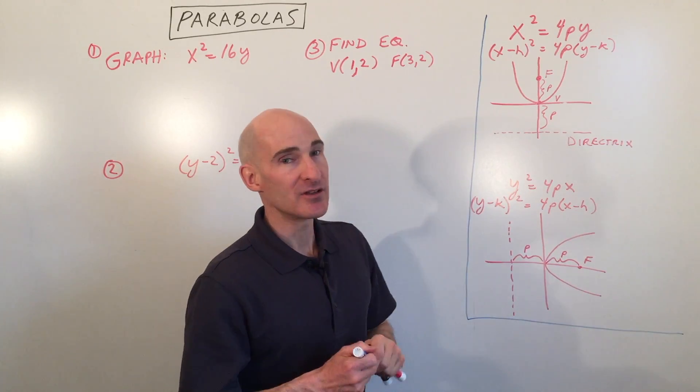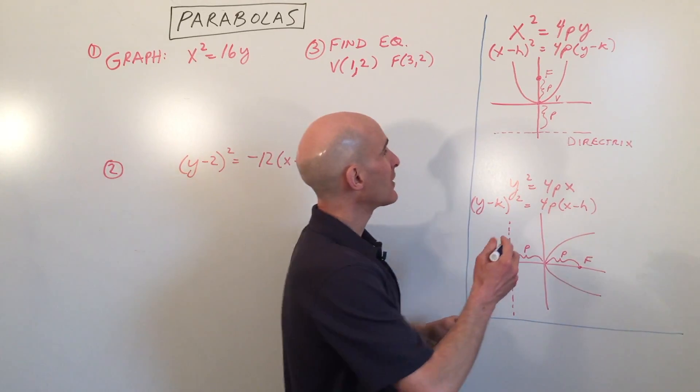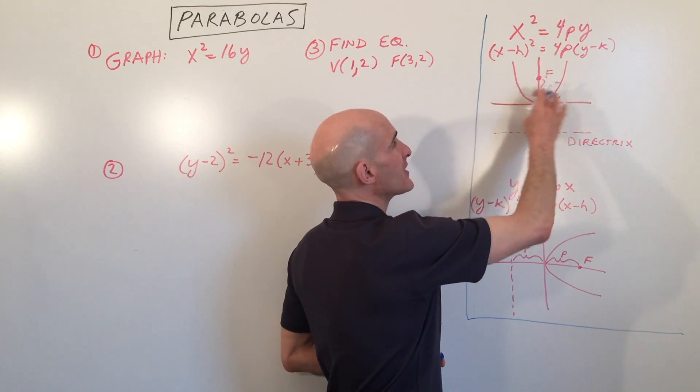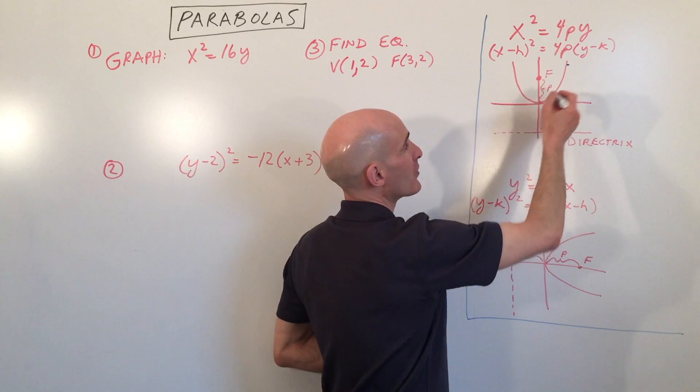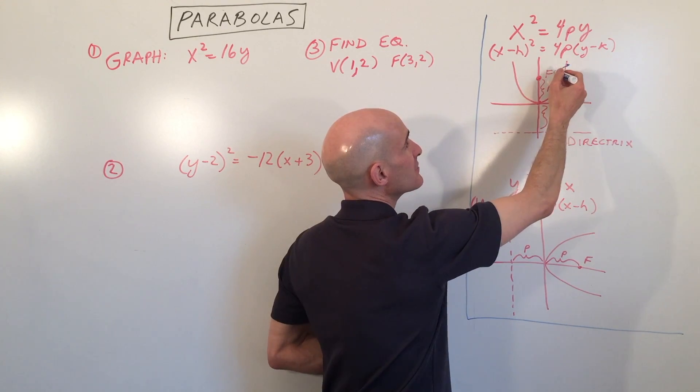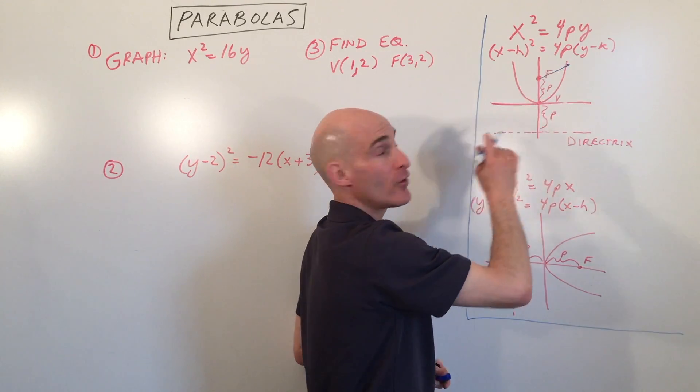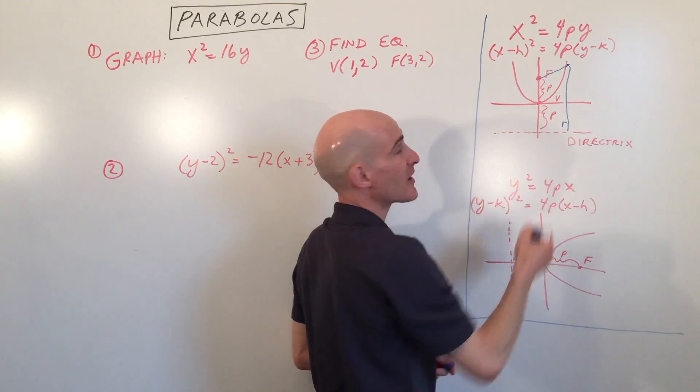What exactly is a parabola? Well, a parabola is a set of all points that are equidistant to a point called the focus and a line called the directrix.